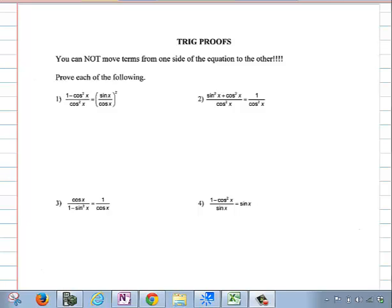So on this first identity, we're going to work with the left side. I think on all of these we're going to work on the left side and we're not going to move terms to the other side of the equation. We're strictly going to work on the left side and try to get to the right side in terms of things being equivalent.